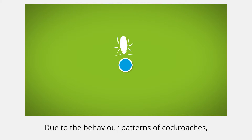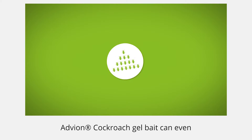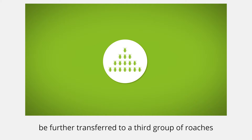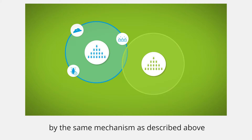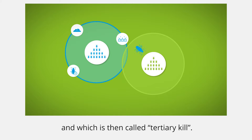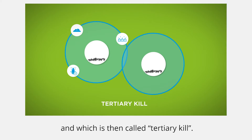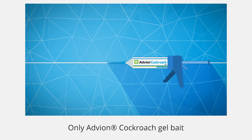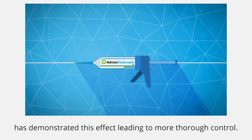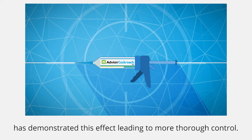Due to the behaviour patterns of cockroaches, Adveant cockroach gel bait can even be further transferred to a third group of roaches by the same mechanism, which is then called tertiary kill. Only Adveant cockroach gel bait has demonstrated this effect, leading to more thorough control.